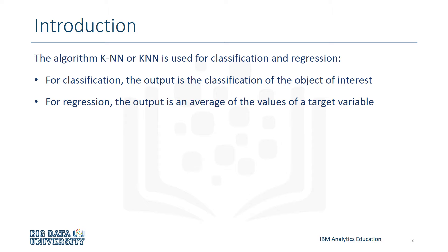For classification, the output of the k-nearest neighbors algorithm is the classification of an unknown data point based on the k-nearest neighbors in the training data. For regression, the output is an average of the values of a target variable based on the k-nearest neighbors in the training data.